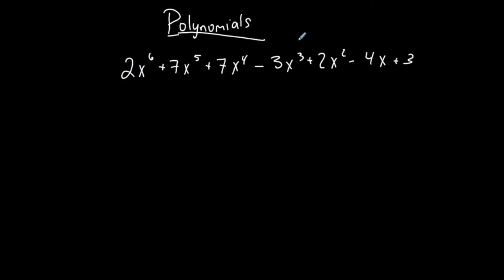A few things about this polynomial: you'll see that it involves pieces called terms. It involves these terms separated by pluses and minuses that contain either numbers multiplied by variables or just numbers. Exponents on the variables are only whole numbers — you're not going to see any negatives, fractions, anything like that as exponents in a polynomial. So you won't see absolute values, square roots, or negative exponents. Those things are not part of polynomial expressions.